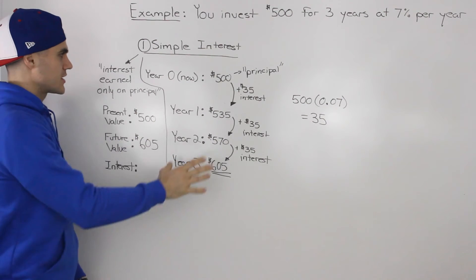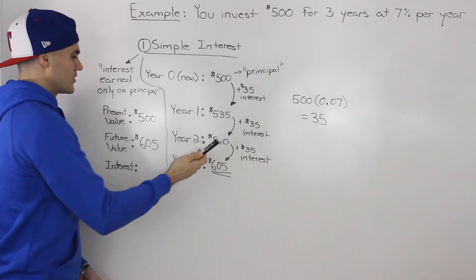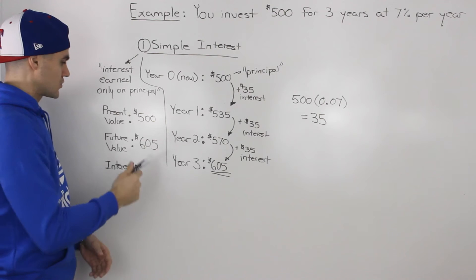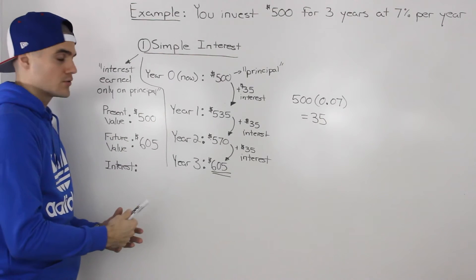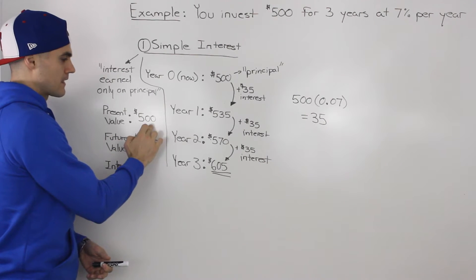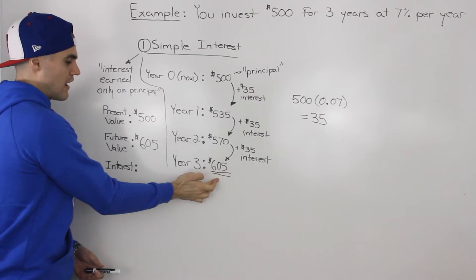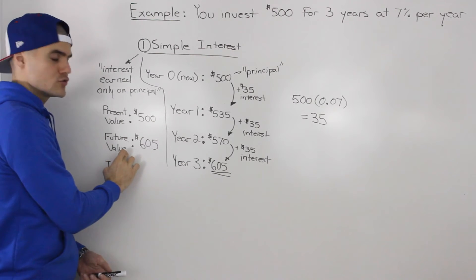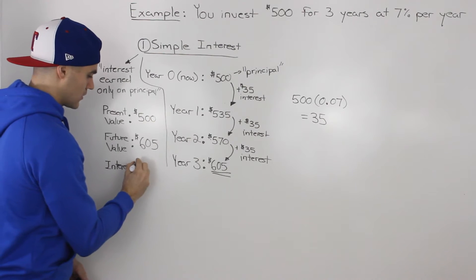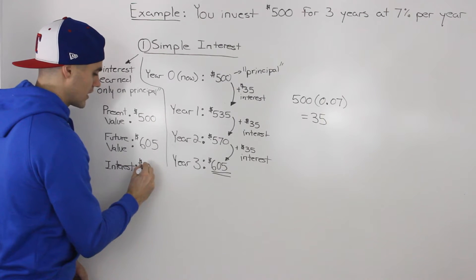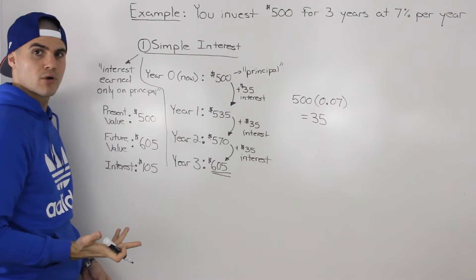To summarize the scenario: we started with $500, which is our present value. That $500 over three years grew to $605, which is our future value. So the interest earned was $105 — the difference between the future value and the present value.